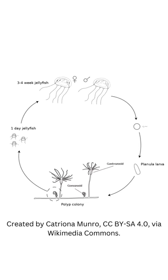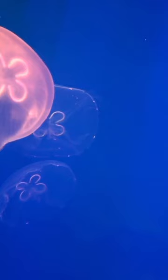Jellyfish have a unique life cycle called alternation of generations, where they go through two distinct forms: a medusa and a polyp. The medusa is the free-swimming form that we most commonly associate with jellyfish, while the polyp is a sessile form that attaches to the ocean floor.